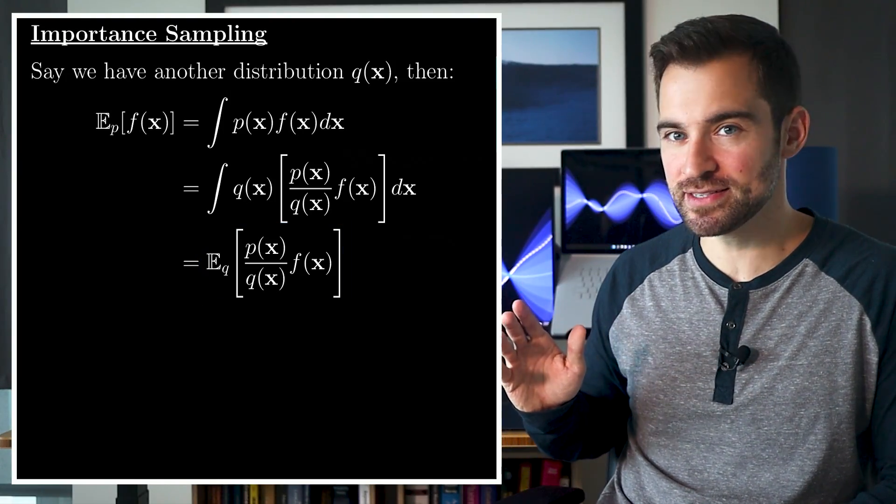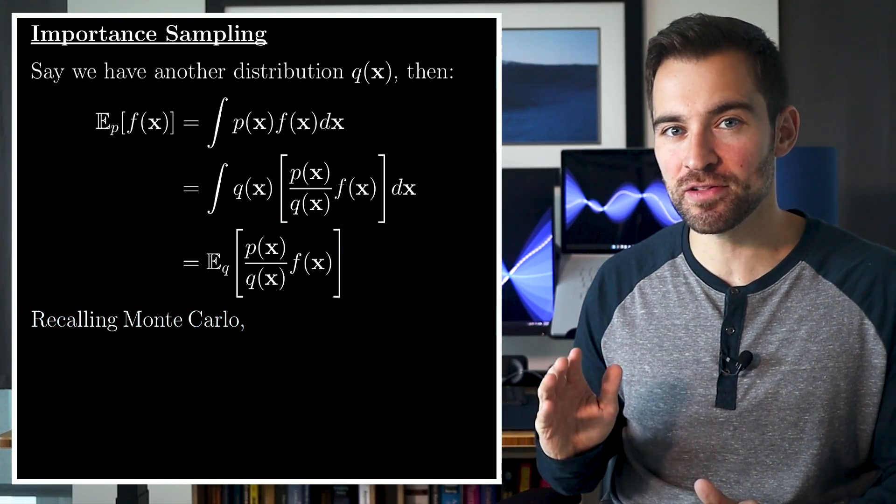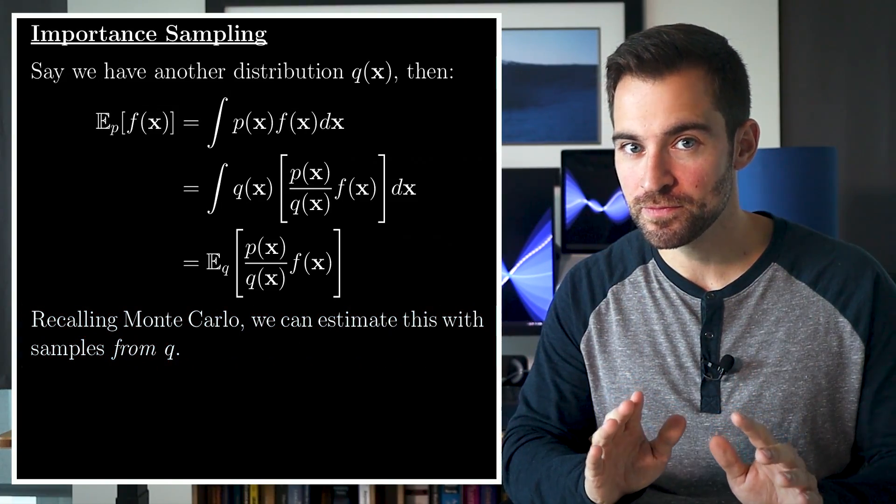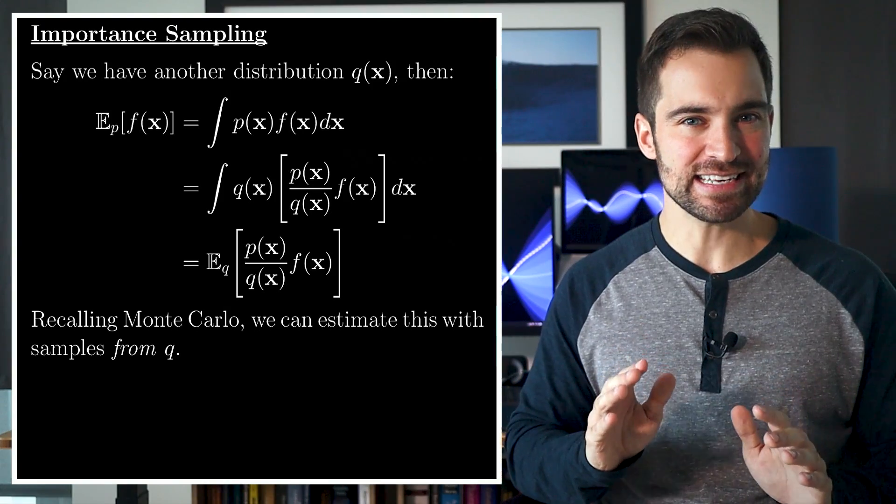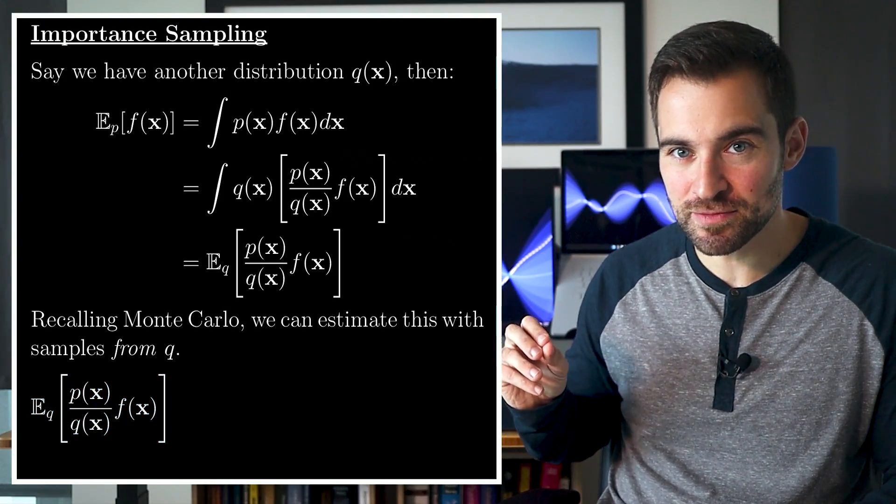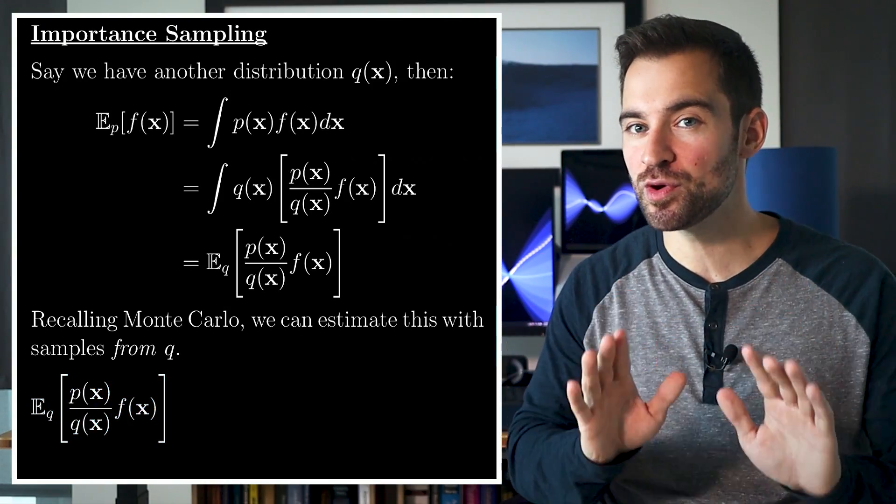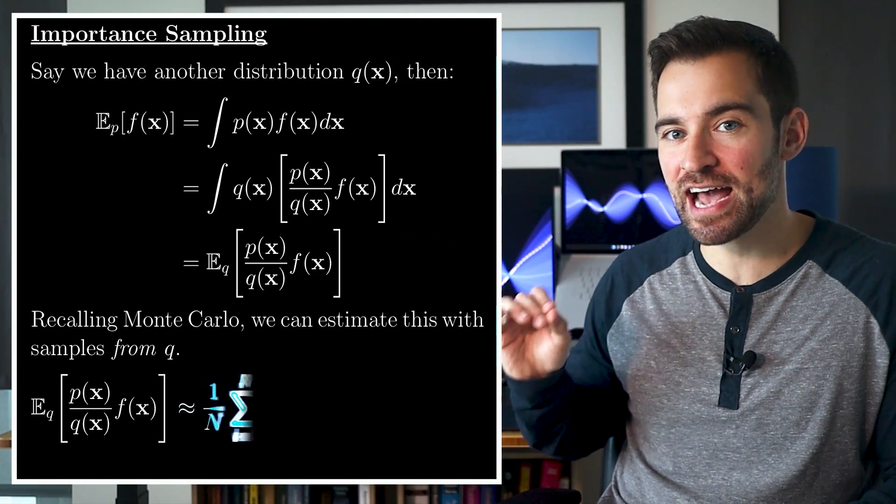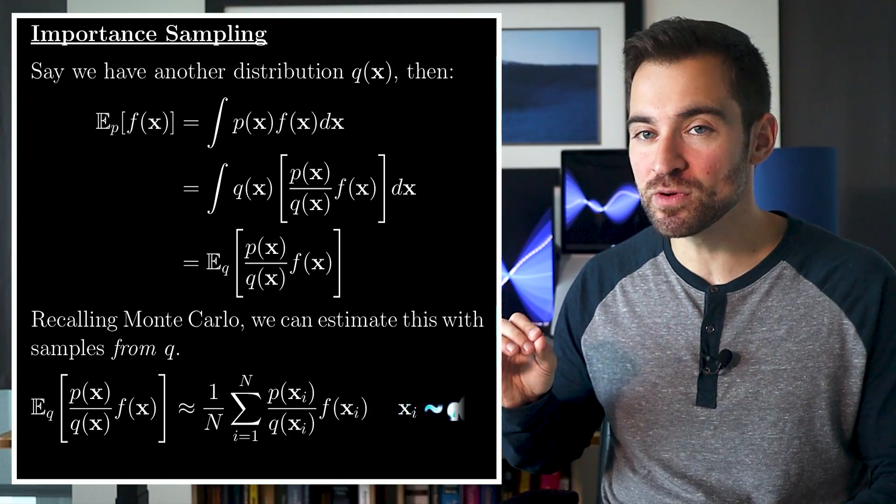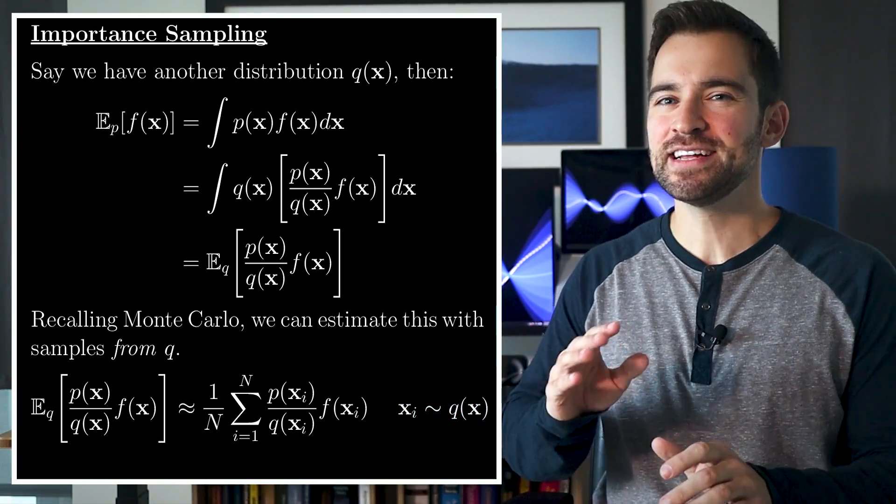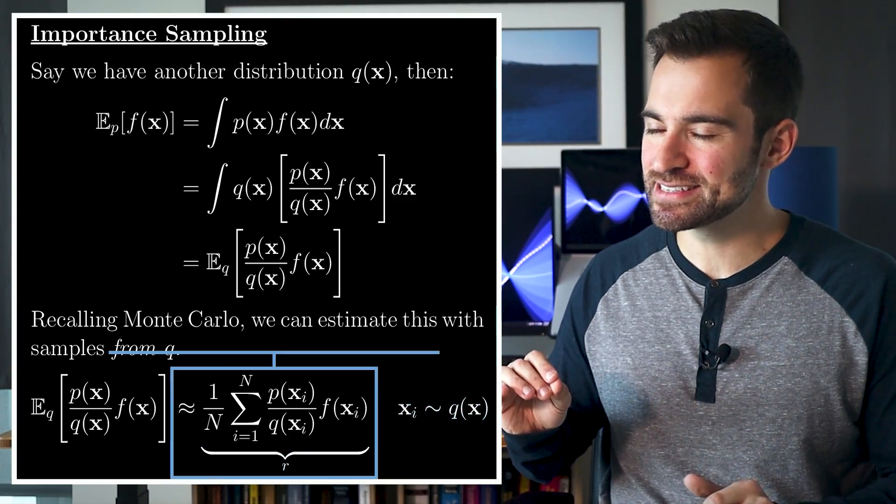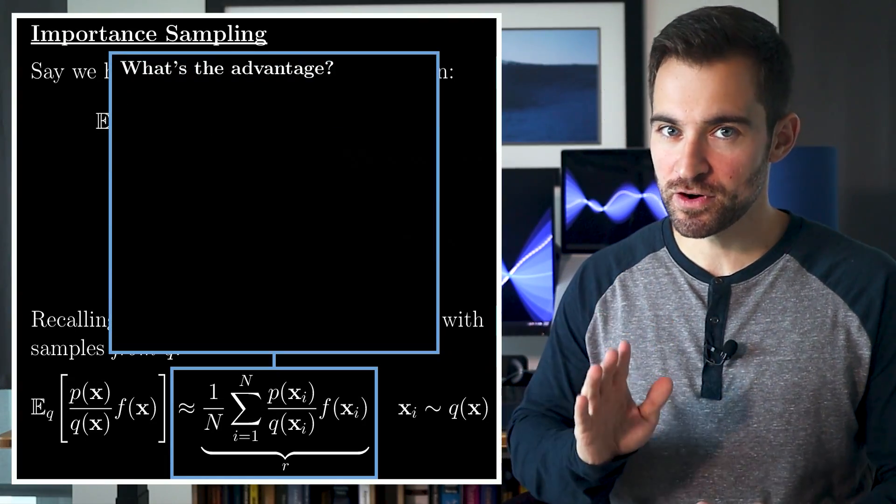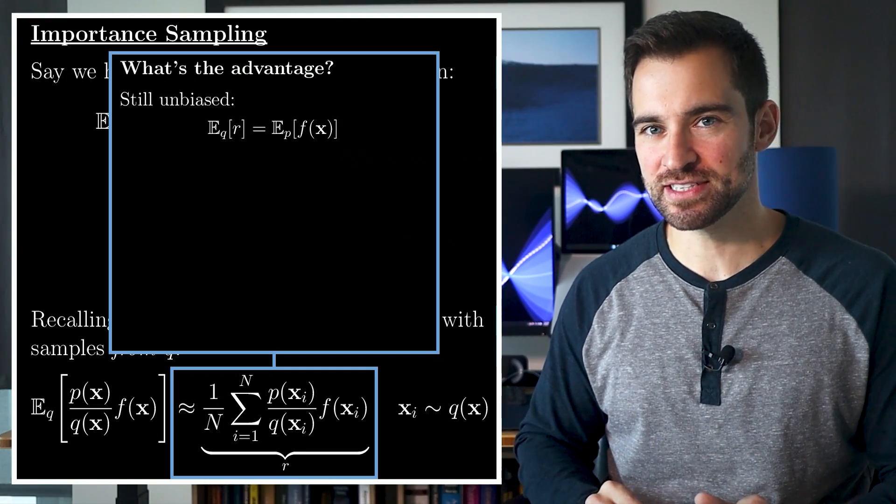Now, if we look at this and we recall the lesson of Monte Carlo, we can estimate this with samples from q. What I mean by that is this expectation, which is equal to the original expectation we're interested in, is approximately equal to this average, where the x_i are sampled from q. Let's call this new average r and ask, what's the advantage of using this? Well, first, it's unbiased, just like in the previous case.